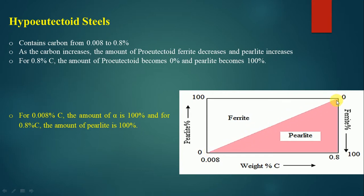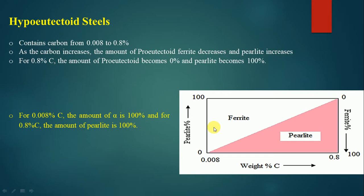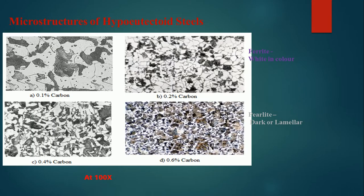At 0.008 percentage, ferrite would be 100% and pearlite will be 0%. So for 0.008% carbon, the amount of alpha ferrite would be 100%, and for 0.8% carbon the amount of pearlite will be 100%. The purest form of ferrite is available at 0.008% at room temperature.